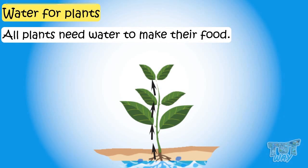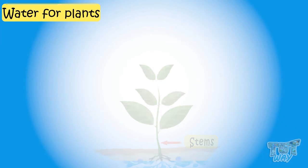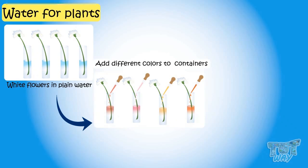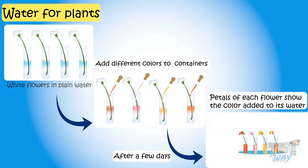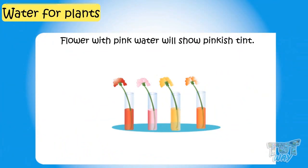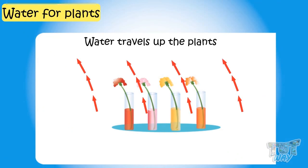Water enters the plants through its roots and then travels through tiny tubes in the stem to its upper parts — that is, all the leaves, branches, and stems. Here we had some white colored flowers and empty containers. We added some edible colors to water and kept them for a few days. After a few days, the petals of each flower showed the color added to its water. Flowers with pink water have a pinkish tint and flowers with yellow water have a yellowish tint — showing that water travels up the plant.